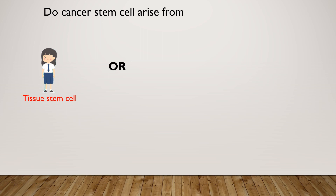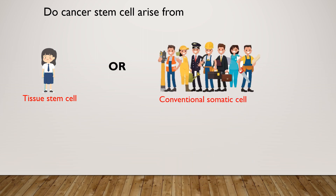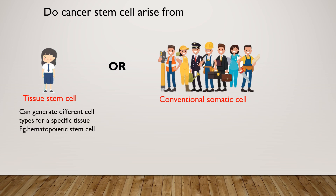Do cancer stem cells arise from a tissue stem cell or a conventional somatic cell? Tissue stem cells can generate different cell types for a specific tissue — for example, a hematopoietic stem cell can give rise to different blood cells like RBCs, WBCs, and platelets. Here, the hematopoietic stem cell is the tissue stem cell and the different blood cell types are the conventional somatic cells.